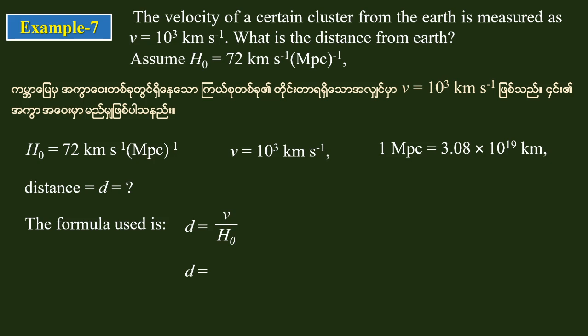Substituting the values, we divide v by H₀. The velocity is 10³ km per second divided by 72 km per second per megaparsec.